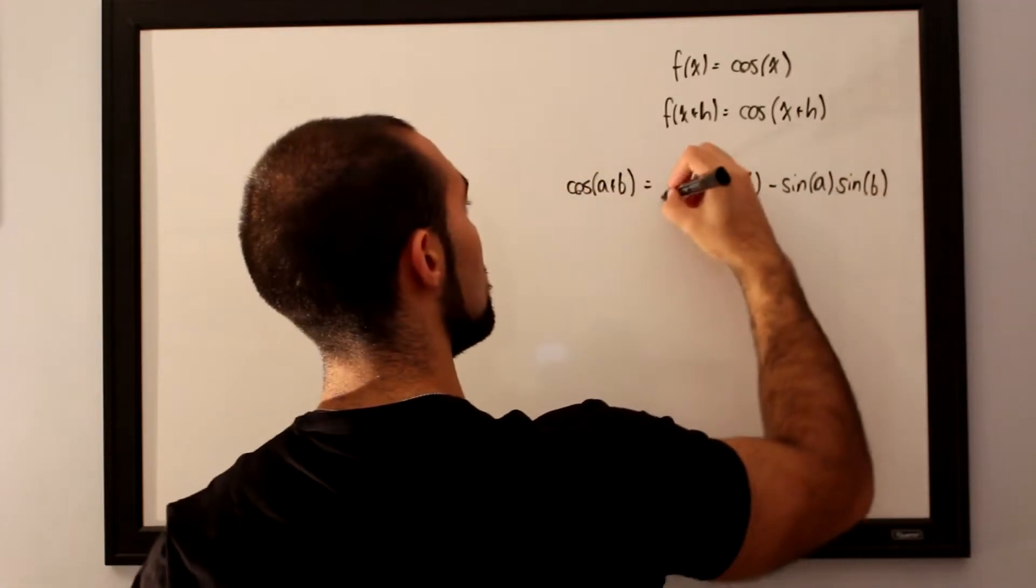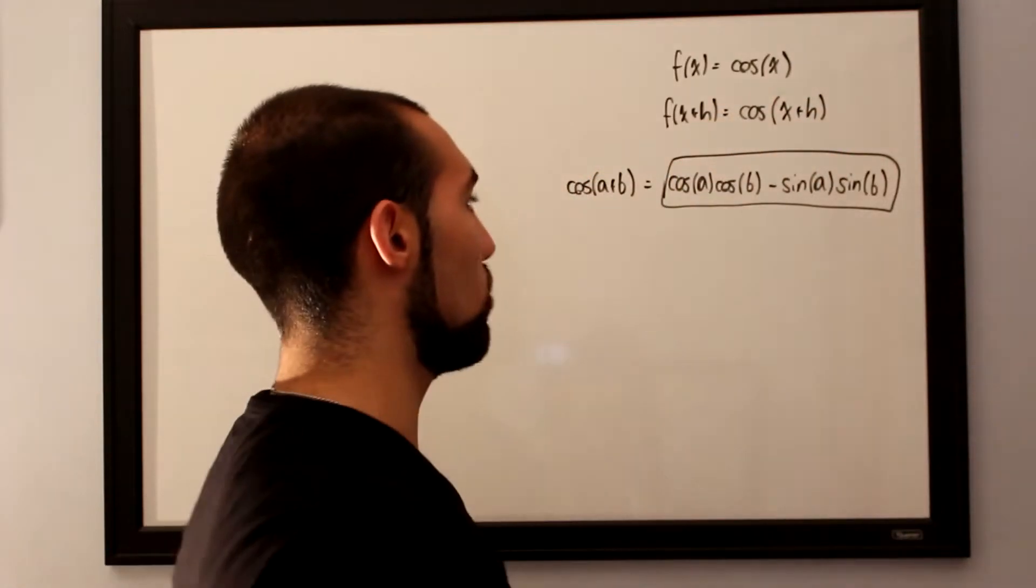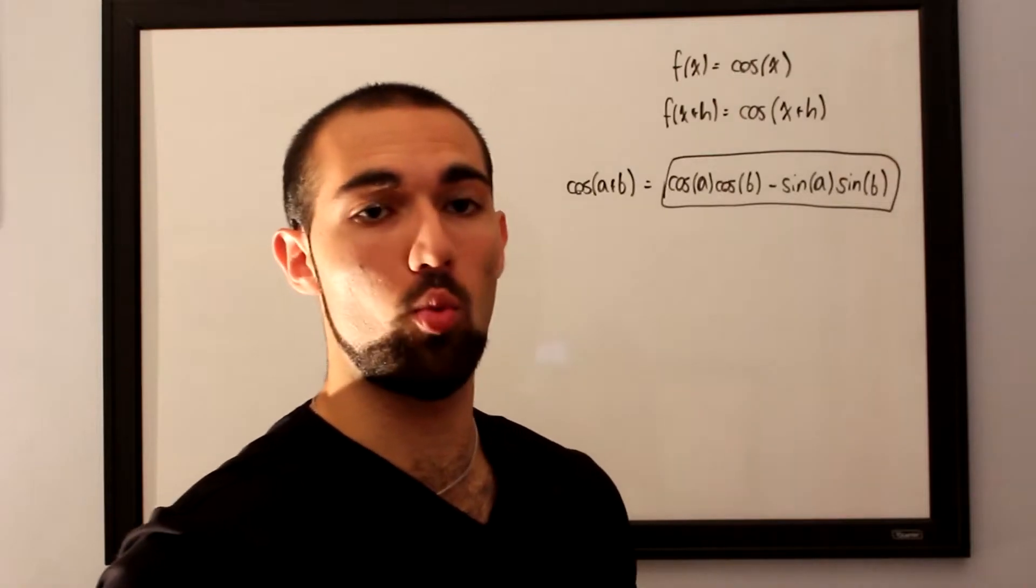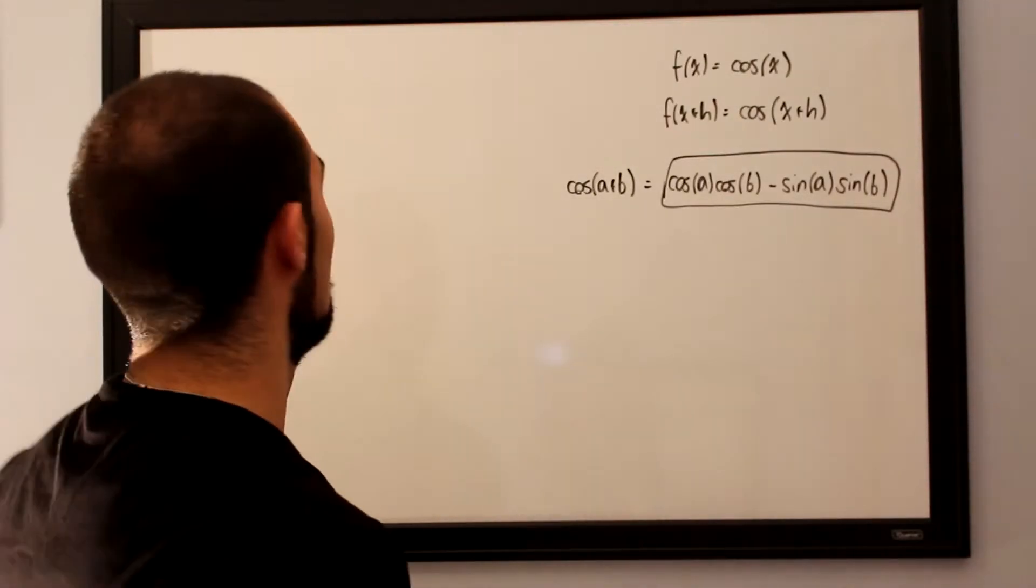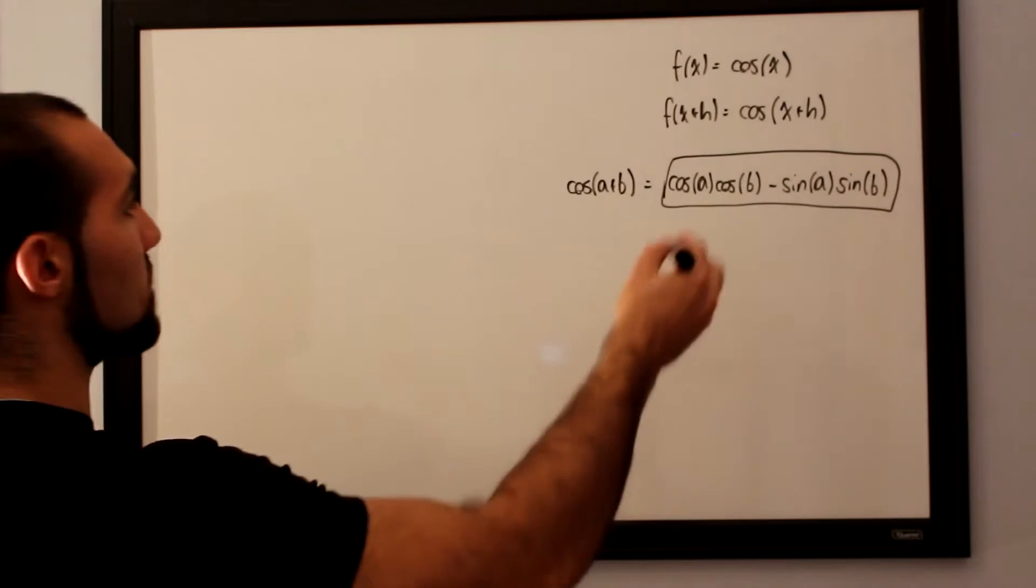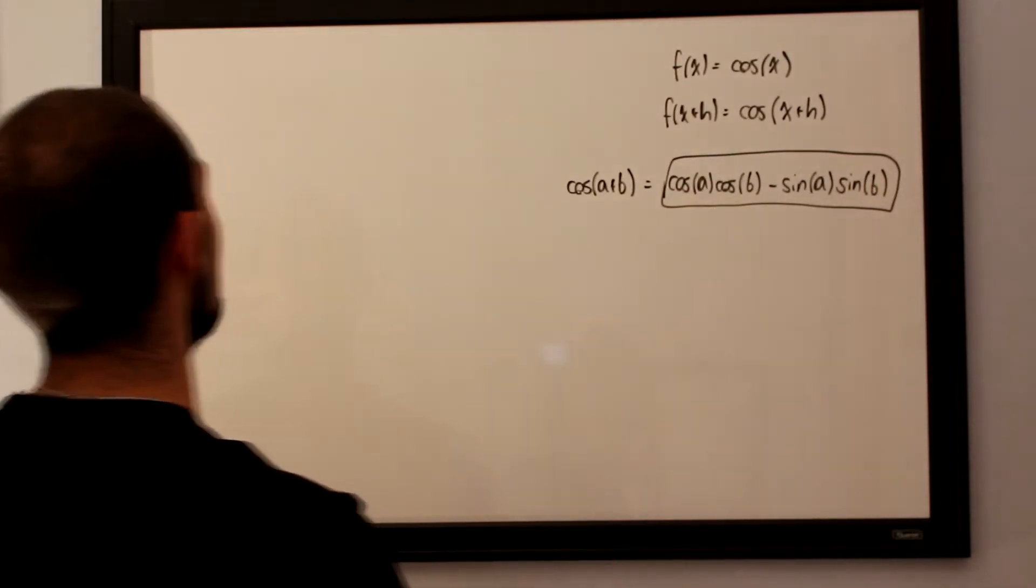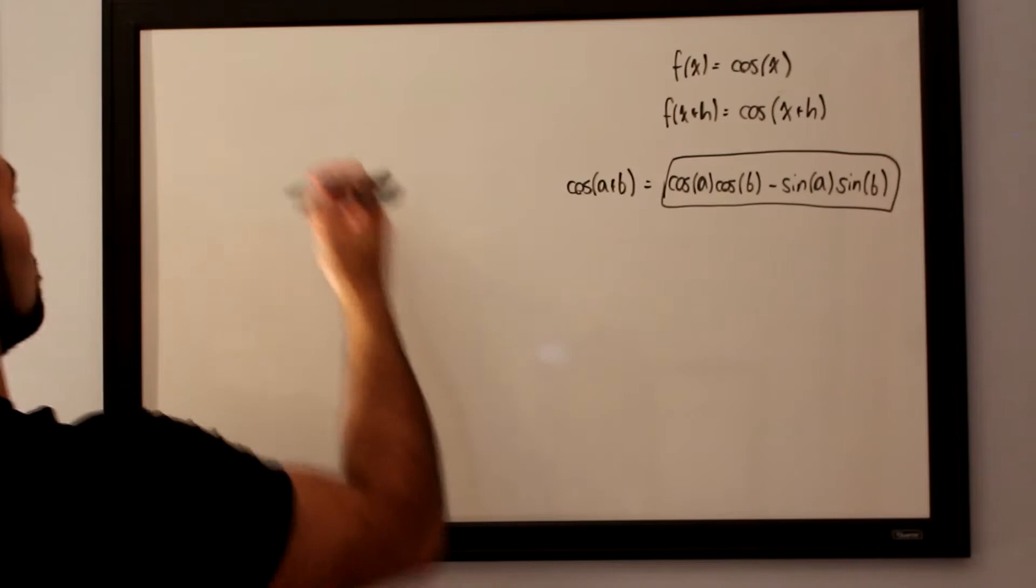So this will be our f of x plus h, but rather than a and b, we will be replacing it with x and h. So we want to evaluate our f of x plus h, let's just use this and replace all the a's and b's with x's and h's.